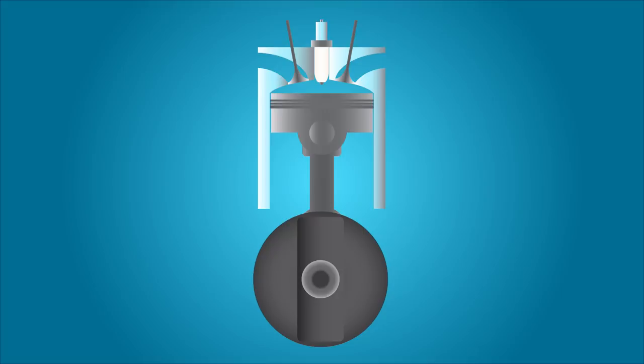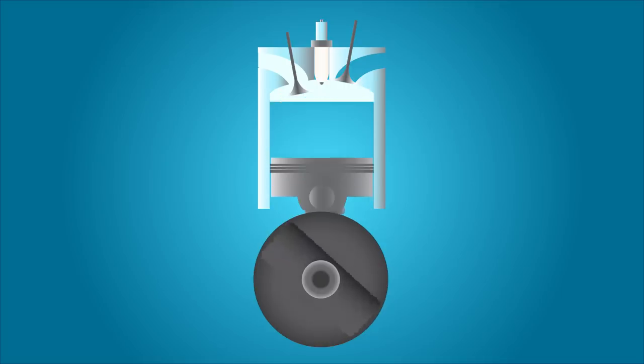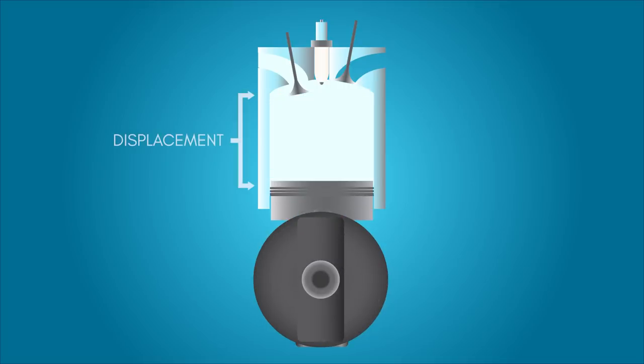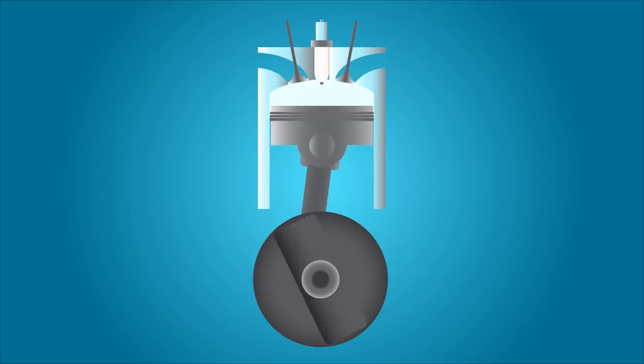An engine extracts energy from the burning of gasoline. It does this by first taking in a mixture of fuel and air into a cylinder. The total working volume of all of the cylinders in the engine is known as its displacement. It then compresses the mixture and ignites it with a spark plug. As the mixture burns, it expands pushing down a piston which rotates a crankshaft. The spent gases are then pushed out through the exhaust.